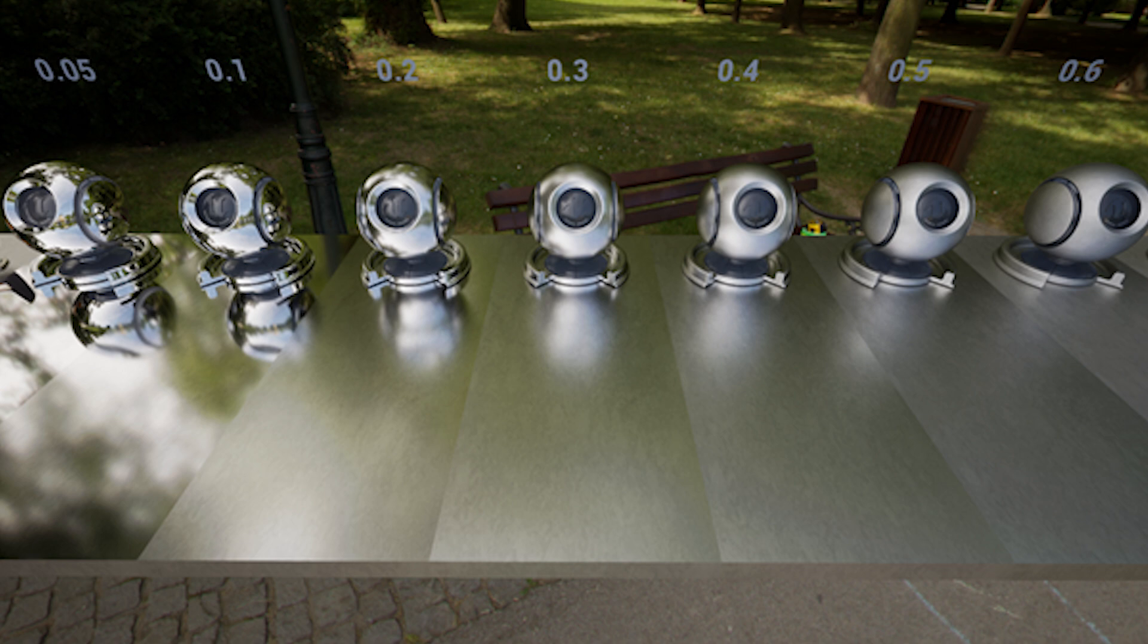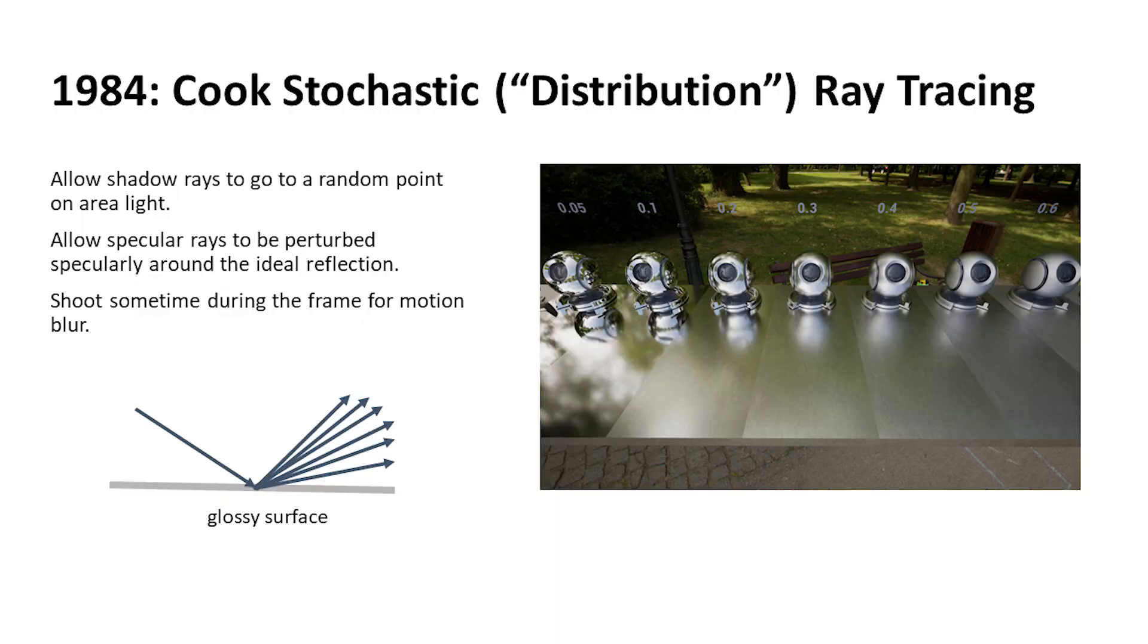The idea here is just that instead of shooting one reflection ray, you're shooting a bunch, or instead of shooting one shadow ray, you're shooting a bunch to try to get a soft shadow.